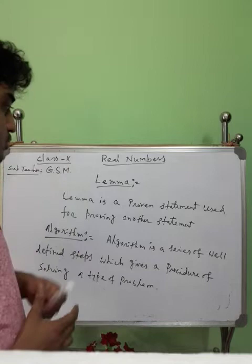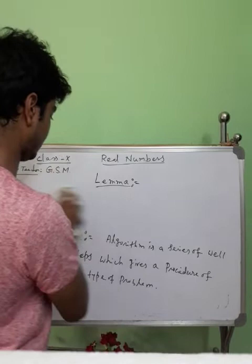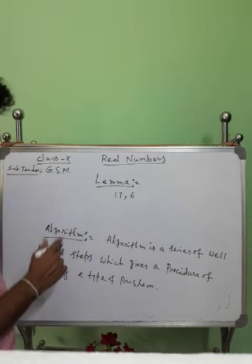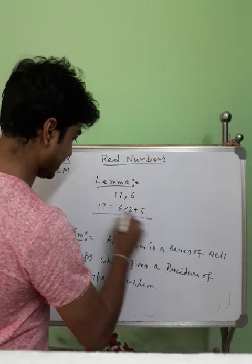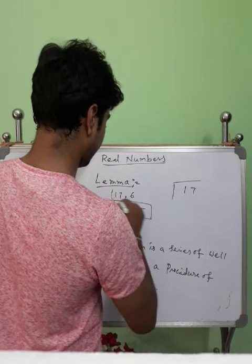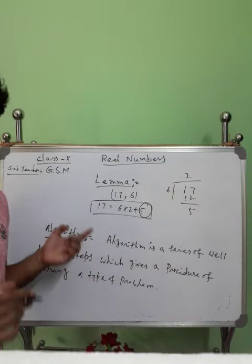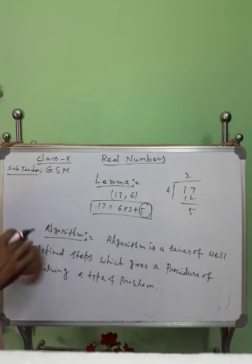For example, 17 equals to 6 into 2 plus 5. We can represent this as 17 = 6×2 + 5, where A is the dividend, 6 is the divisor, and the quotient is 2.